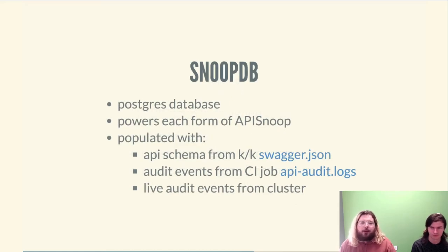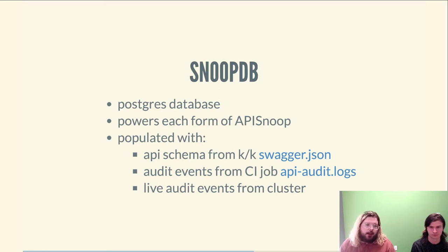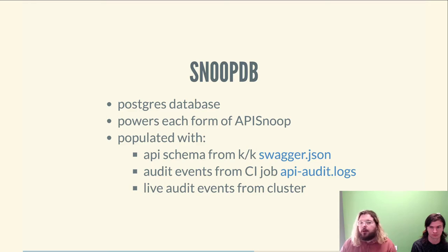API Snoop is powered by a database called SnoopDB — simply a Postgres database filled with the API schema from the Kubernetes Swagger JSON, as well as audit events from CI jobs running the full E2E suites on clusters. You can also deploy API Snoop to your own cluster, at which point it will log live audit events as they happen, which is useful for test writing to get immediate results and ensure tests are hitting what you expect.